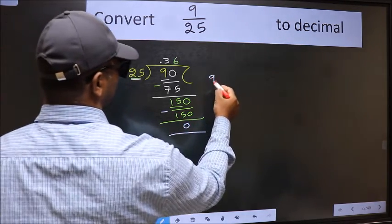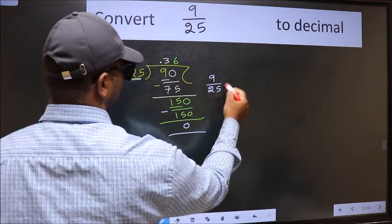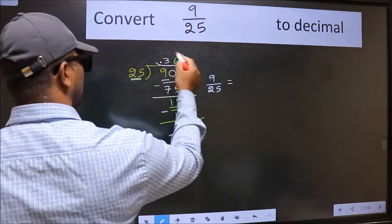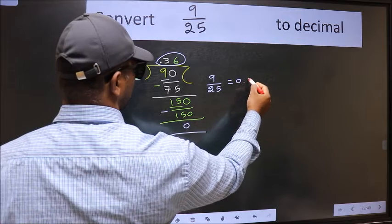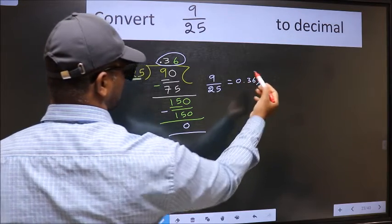Therefore, decimal of 9 by 25 is this one. 0.36 is our answer.